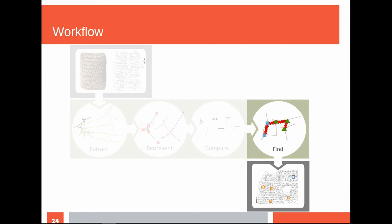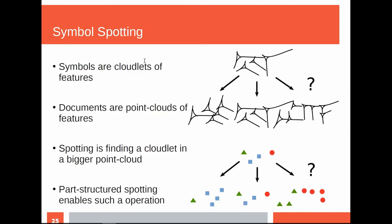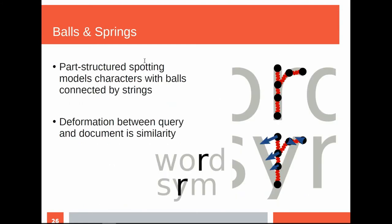At this point, we have a mathematical representation of wedges, a mathematical representation of symbols, and a distance function. With those two tools, we can create a method for finding symbols in cuneiform tablets. The basic idea is that we have decomposed cuneiform script or symbols into point clouds — cloudlets of wedges — where each wedge is a feature vector. We want to find this point cloud inside a bigger point cloud, which is our document. There is a method to do that called path structure spotting, which comes from Latin word spotting and which we adapted for cuneiform.